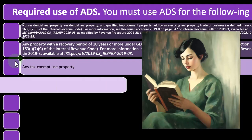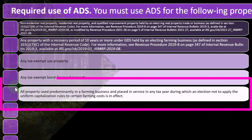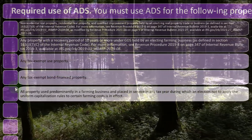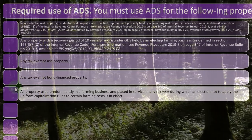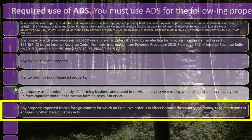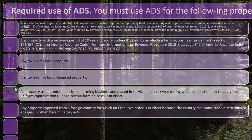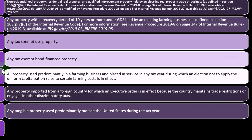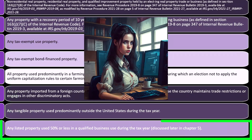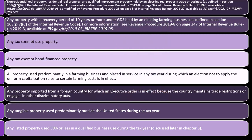Any tax-exempt use property, any tax-exempt bond-financed property, all property used predominantly in a farming business and placed in service in any tax year during which an election not to apply the uniform capitalization rules to certain farming costs is in effect, any property imported from a foreign country for which an executive order is in effect because the country maintains trade restrictions or engages in other discriminatory acts, any tangible property used predominantly outside the United States during the tax year, and any listed property used 50% or less in a qualified business use during the tax year.